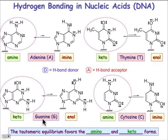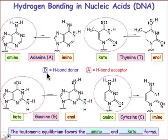Guanine also has a keto and enol form, with the keto form being favored. Cytosine has an amino and an imino form, with the amino form being favored. Knowing the correct tautomeric forms, we can now look at and assign hydrogen bond donors (D) and hydrogen bond acceptors (A) to each nucleobase.